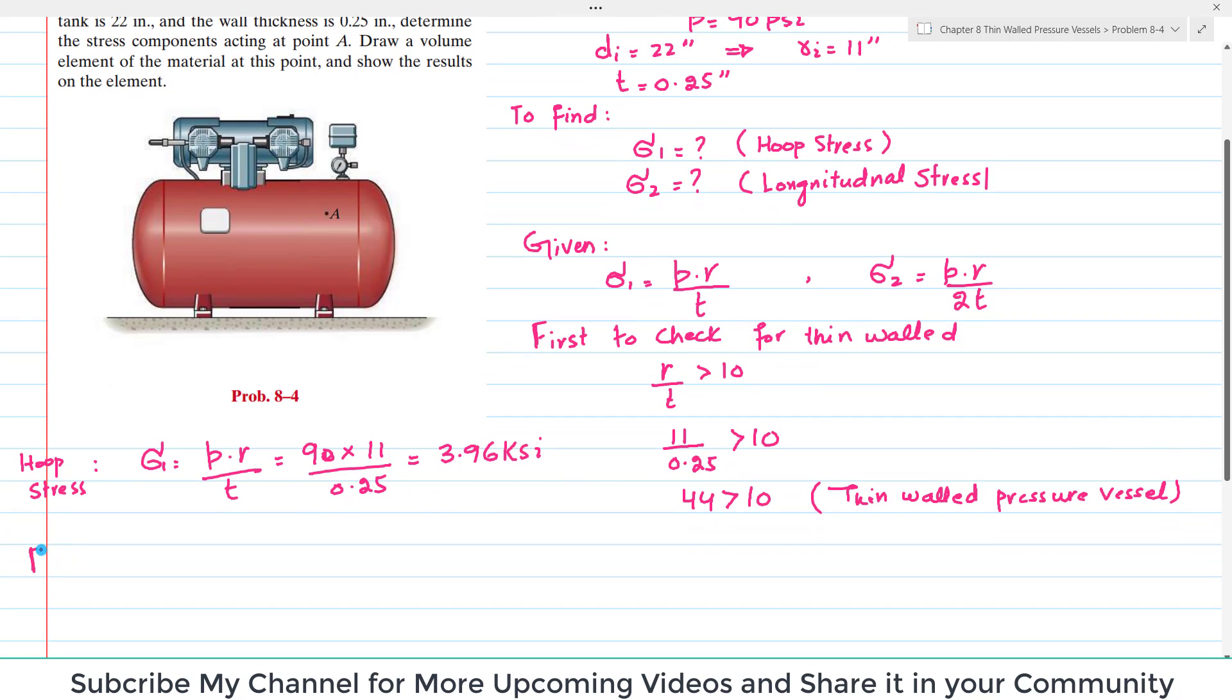For longitudinal stress, we have the formula sigma 2 equals P times R divided by 2 times T. You have all the values: P is 90 psi, the inner radius is 11 inches, 2 multiplied by thickness is 0.25 inches. So when you calculate it, it will be 1.98 KSI.